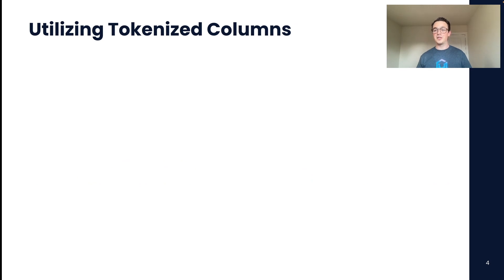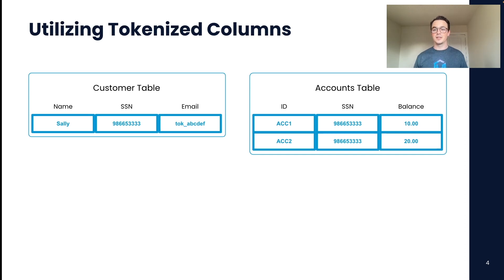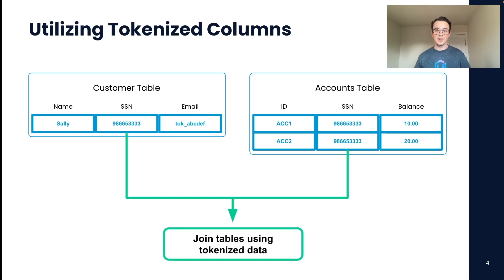Next, we'll talk about how we can utilize tokenized data. After we abstract that customer data away, how can we ensure that your business can still run and your analysts or data scientists can still run their queries? Here I have an example of a customer table with the same information as before, and an accounts table that has a list of all of the balances for that customer. The SSN is the only thing that is common between these two tables, so the analysts will need to use the SSN to join them. Because both have been tokenized with the VGS native app, those same values can be used to join the tables, so your business runs as usual.